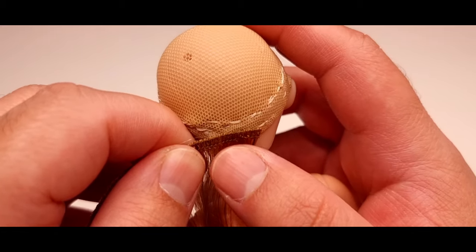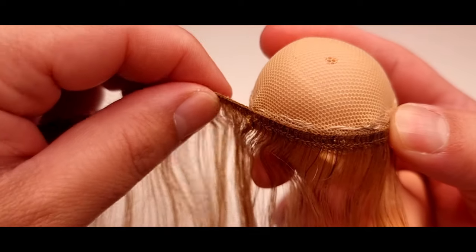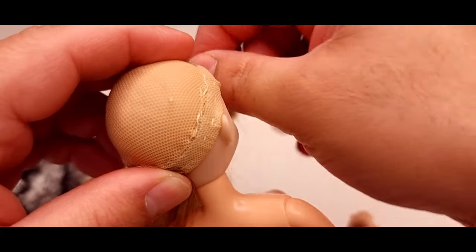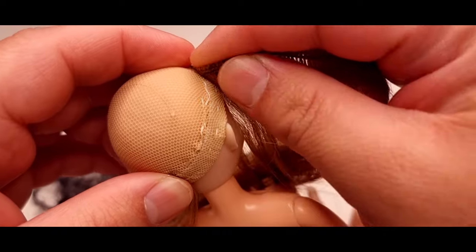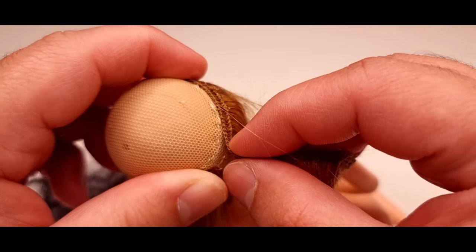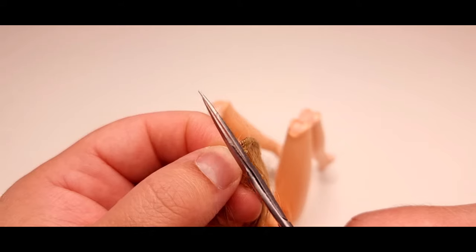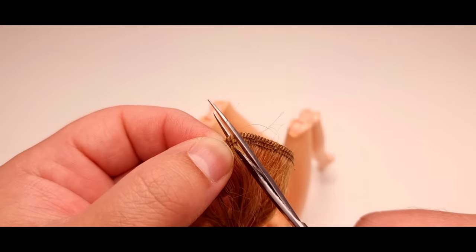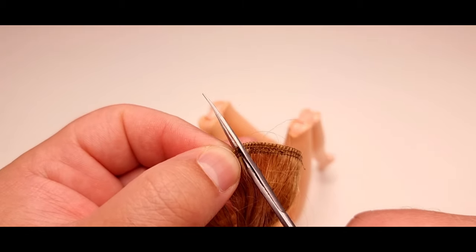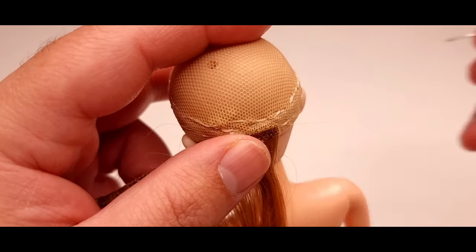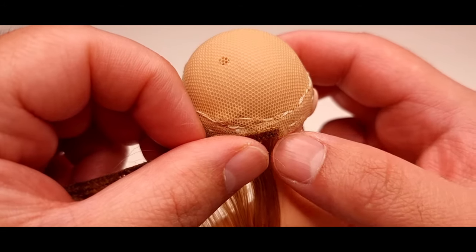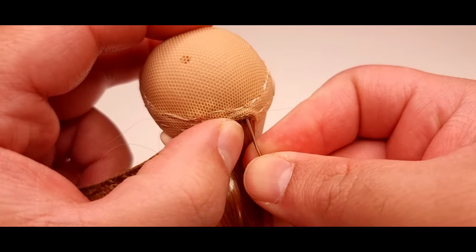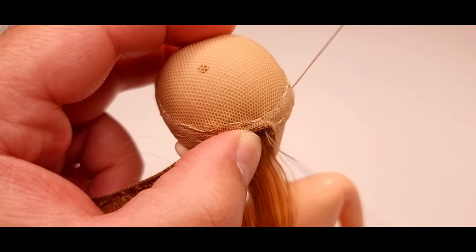We're gonna start to sew the weft all around the perimeter of the head. Make sure to sew the weft to the fabric, not to the elastic, okay? After you measure the weft, cut it and start to sew. As I mentioned before, sew the weft to the fabric, not to the elastic.